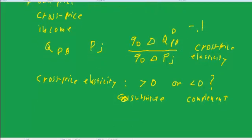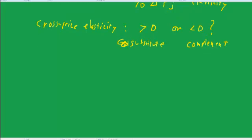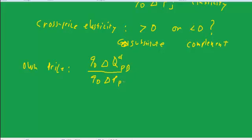Own price elasticity is the percent change in the quantity divided by the percent change in the price of that own good. So in the case of peanut butter, it would be the percent change in the quantity demanded of peanut butter over the percent change in the price of peanut butter.